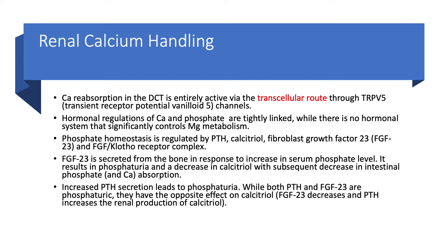Hormonal regulation of calcium and phosphate are tightly linked. As I've said many times, whenever you think about calcium, think about phosphate and magnesium — these three things are connected. For calcium and phosphate we have hormonal systems, but not for magnesium. For phosphate — and we'll discuss this in detail in the phosphate chapter — phosphate homeostasis is regulated by PTH, calcitriol, and a new player: fibroblast growth factor 23, FGF-23. Never forget FGF-23 — it is very important. Also notable is the FGF-klotho receptor complex — more on that in future lectures.